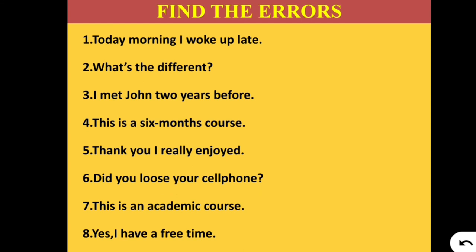Number 7: 'This is an academic course.' The error is in pronunciation. I pronounced it 'academic' — the correct pronunciation is 'acaDEMic,' with stress on the '-demic' syllable. This is an acaDEMic course. You must not pronounce it any other way. The '-demic' part is stressed. You should be aware of stressed and unstressed syllables.